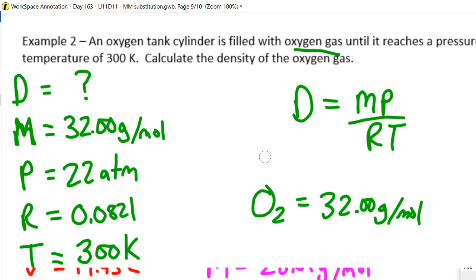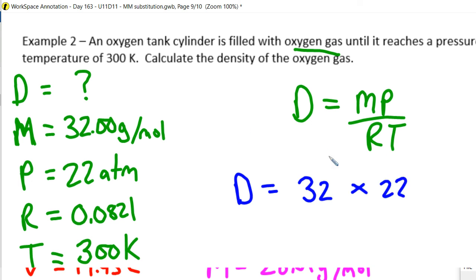So I can solve for density. So I plug those numbers into my equation. And I get the density of a gas. The density of the oxygen gas in that metal tank under pressure is 32 the molar mass times 22 the pressure. ATMs of pressure,